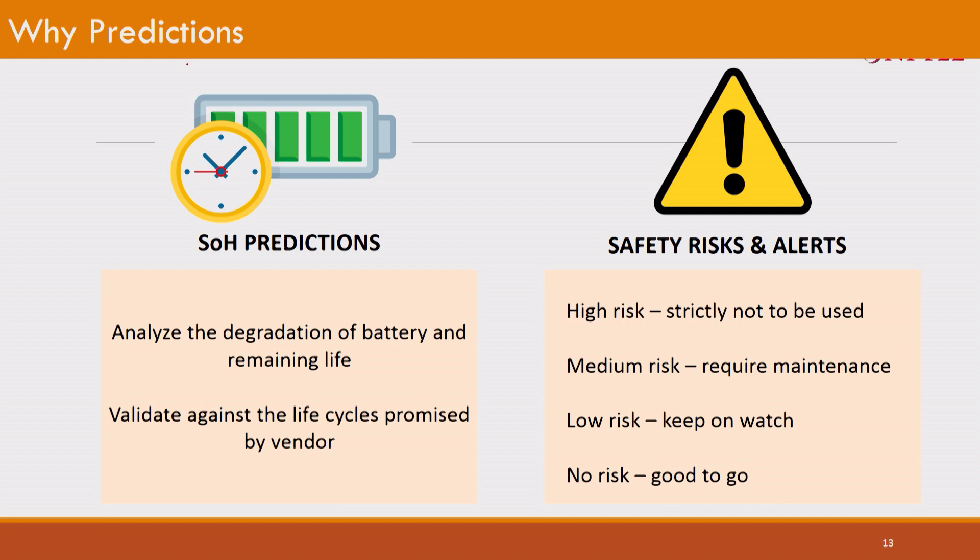The BMS takes decisions based on local parameters at that particular time — current charge rate, discharge rate, temperature — to decide cutoffs and calculate degradation, sending results to the display cluster or cloud. But apart from that, the whole history of usage, such as how long the battery stayed at 35°C, 25°C, or 55°C, will have an impact on calculating SOH. That historical data is where all these records become important to predict SOH — and this is the most critical parameter in battery analytics.